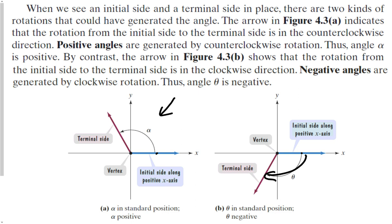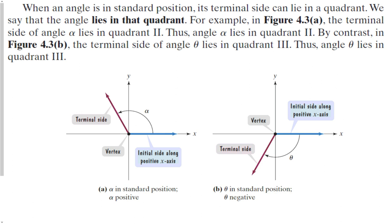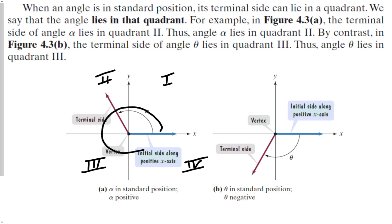So alpha is positive in part A and theta is negative in part B. When you have an angle in standard position and its terminal side lies in a quadrant, we say the angle lies in that quadrant. As long as you're starting on the positive x-axis, we can say this angle lies in quadrant 2. Remember the quadrants go 1, 2, 3, 4 in a positive direction — counterclockwise — which kind of makes sense.